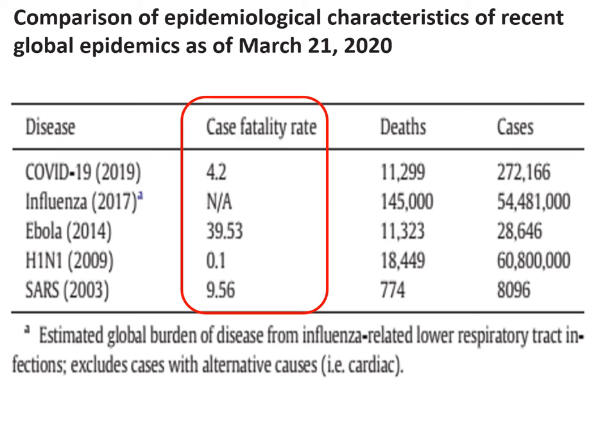Comparing epidemiological characteristics of recent global epidemics as of March 21, 2020: the case fatality rate of COVID-19 is 4.2%; influenza is not applicable; Ebola is 39%; H1N1 is 0.1%; and SARS-CoV-2 in 2003 was almost 10%. So COVID-19 has a moderate case fatality rate, but the quick transmission is the main danger of this pandemic.